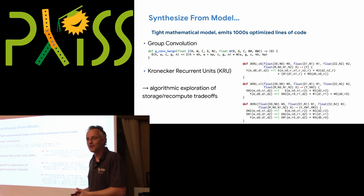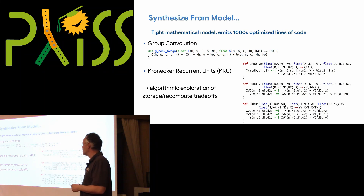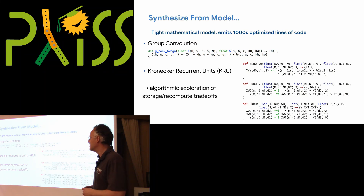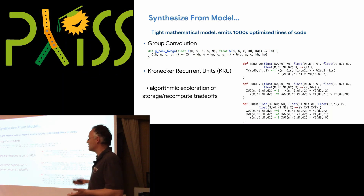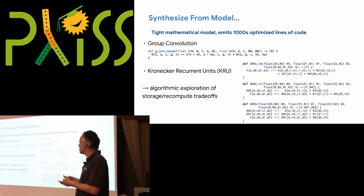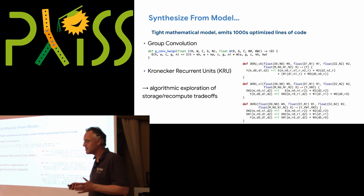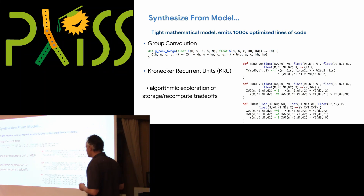The whole point is: we don't want an engineer to spend three months doing something that can be automated. In the end they were getting essentially the same performance as we did — a little better because they do it by hand. But you could just take the paper formula, write it — it's almost LaTeX — and get the numbers. That was the story we wanted to demonstrate, and it was a success.